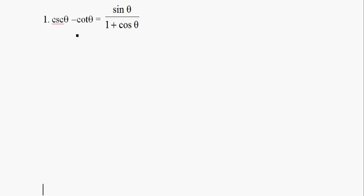Okay, so here's some more trig identities. It's pretty clear the left-hand side is more involved than the right-hand side, so I'm going to change this into sines and cosines. Cosecant is 1 over sine theta, minus cotangent is cosine over sine.